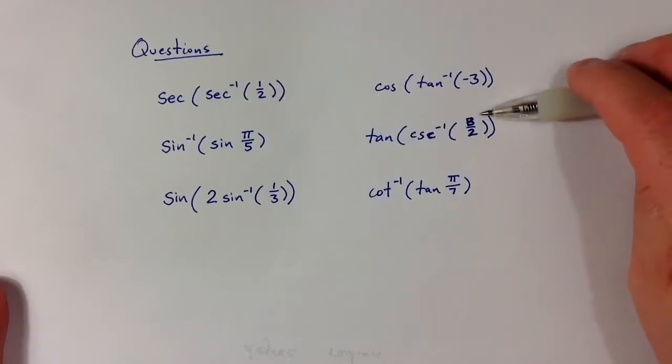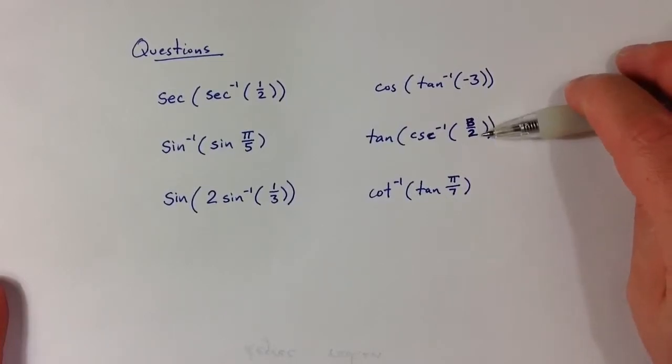Let me point out my penmanship was a little bad here. This is a B. So this is tangent of cosecant inverse of B over 2.